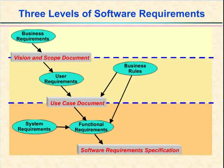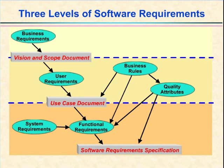Quality attributes are often called the 'illities.' They include usability, portability, maintainability, availability, and many others. They don't all end in '-ility,' such as integrity, efficiency, and robustness. Such requirements are also called quality factors or quality of service requirements. Performance is another example of a quality attribute. These kinds of non-functional requirements describe how well the product does something, not specifically what it does. In my experience, very few projects do a good job of specifying their quality requirements. Therefore, Module 8 of this course will describe quality attributes and other non-functional requirements and show several examples of how to specify them in a precise and verifiable fashion.